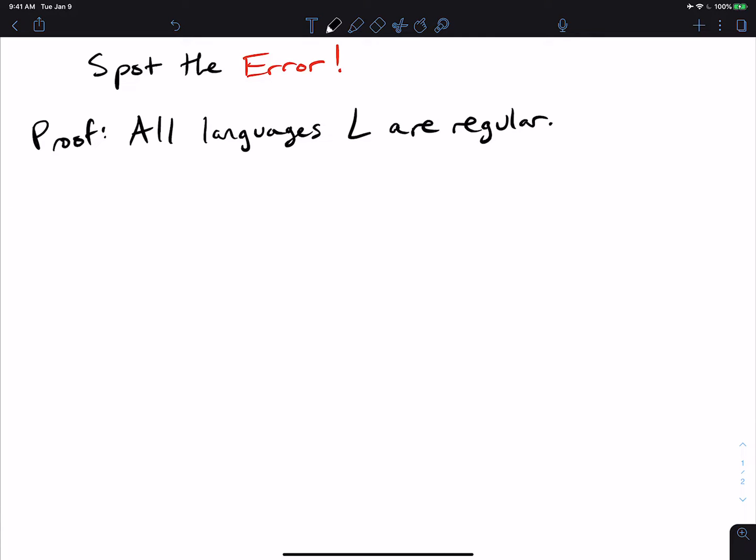Alright, let's switch things a little bit today. Let's talk about this proof which shows that all languages are regular. And of course, we know that this is not true. So what I want you to do is to spot the error in the proof that we're going to actually do right here.